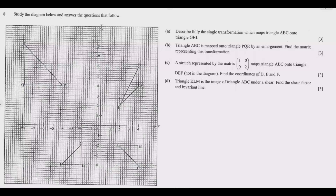Question A: describe fully the single transformation which maps triangle ABC onto triangle GHI. Let's go step by step. Looking at the pairs of sides, A matches with G, B matches with H, and C matches with I. The first question is: has the area of these two triangles changed? It has not changed.